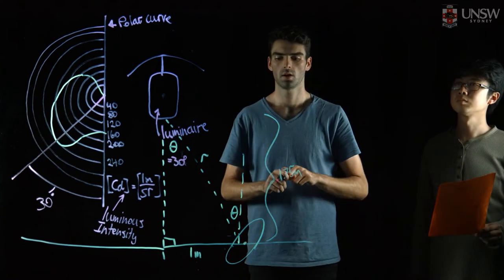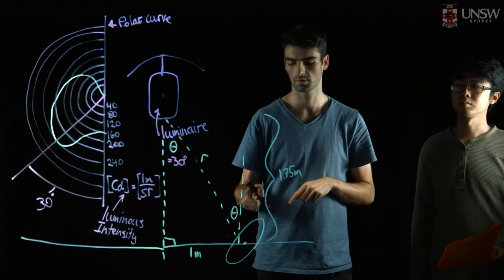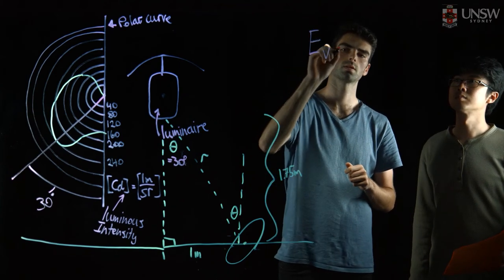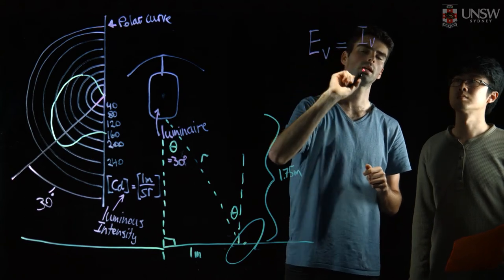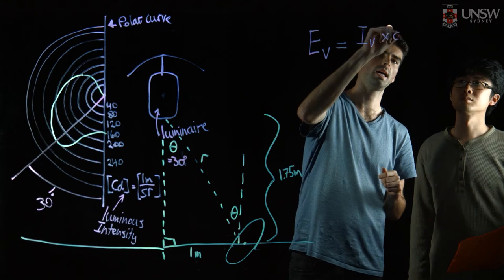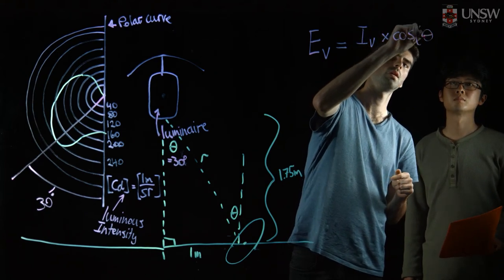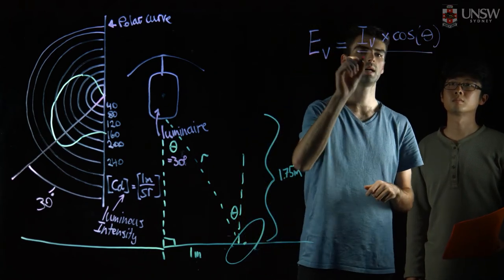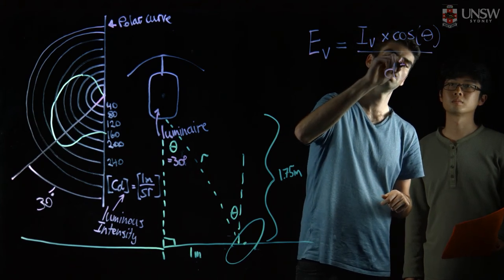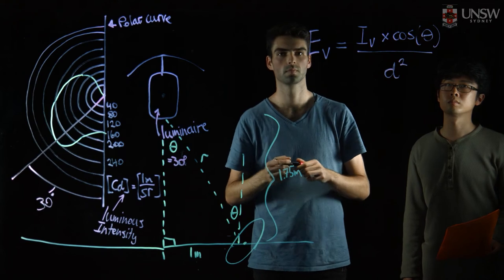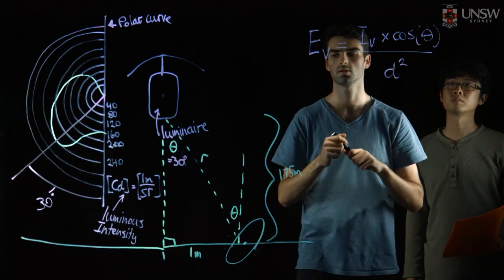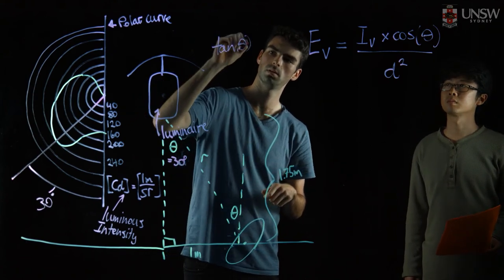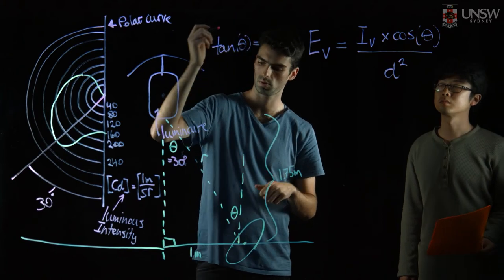In the previous proof I used beta, but we'll use theta here. Now we just have to put everything together to find our illuminance. We know our luminous intensity multiplied by our cosine of theta — the angle between the normal to the surface of interest — divided by our square distance relationship. To determine theta, you can simply use the tangent of the angle between the distances we've been given.